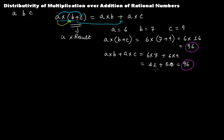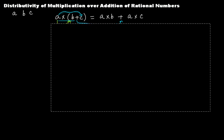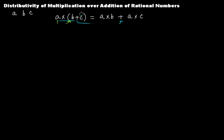So the point is that distributivity of multiplication over addition is not only true for rational numbers, but for integers and whole numbers as well. Now let's take some examples for rational numbers. Let's say a is 4 over 3, b is 7 over 9, and c is 8 over 3.